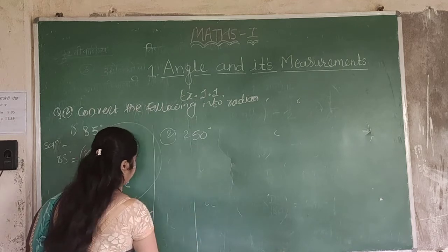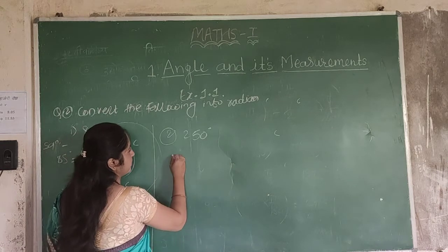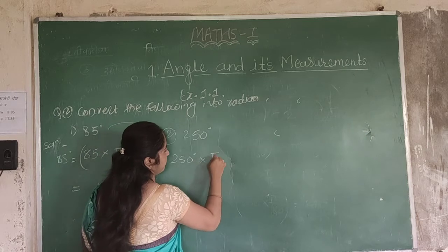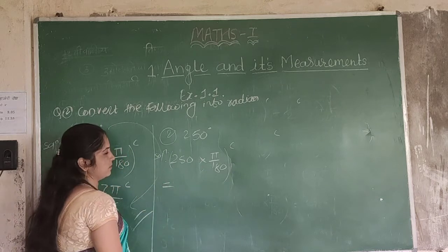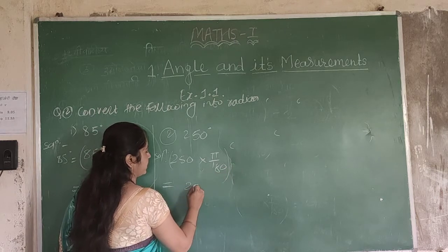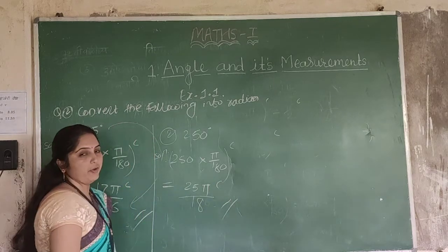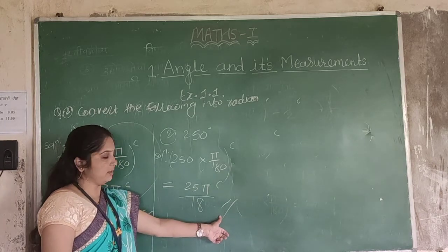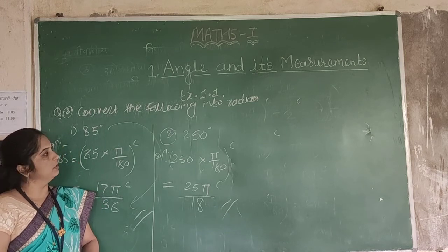Next question: 250 degrees — convert to radian measure. Same solution: 250 degrees into pi divided by 180. We simplify the zeros cancel giving 25 into pi divided by 18. So the final answer is 25pi divided by 18 radians.